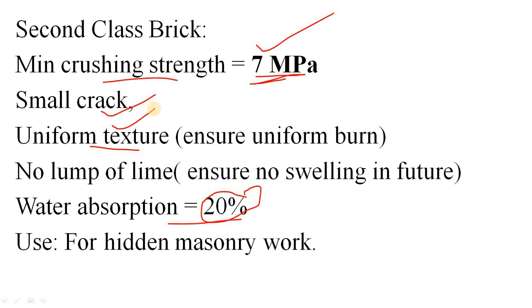Second class brick is mainly used for all types of hidden masonry work, whether it is in your partition wall, external wall, internal wall, or in case of footing base. You can use second class brick. And if all these criteria are not satisfied for a particular brick, then it is classified under third class brick.